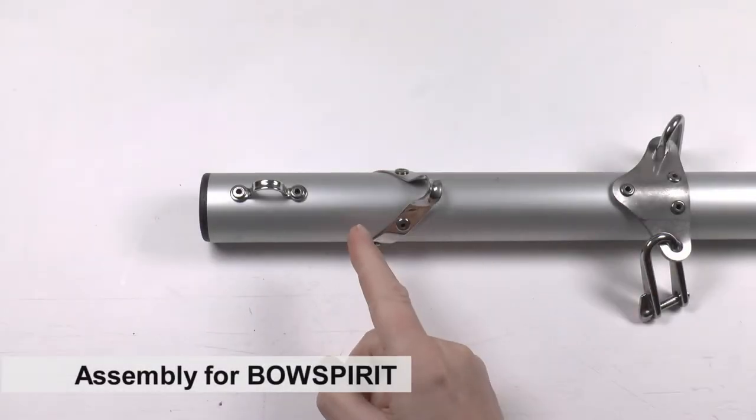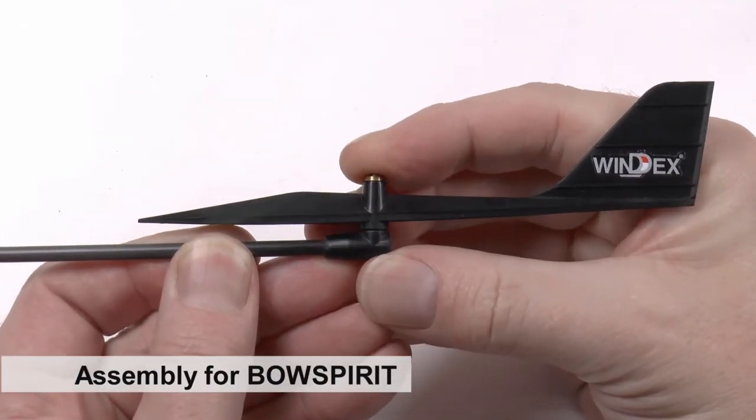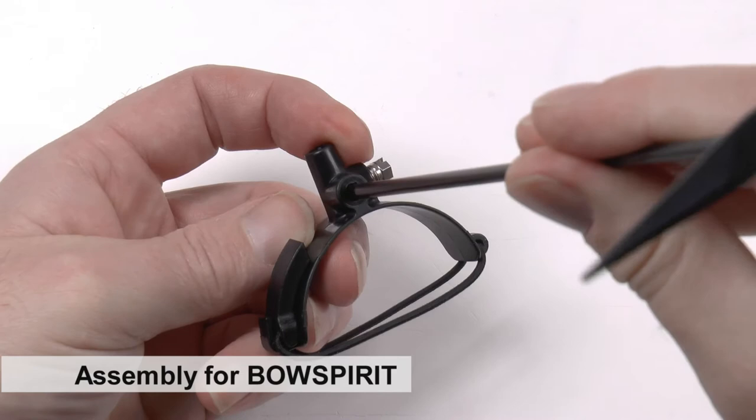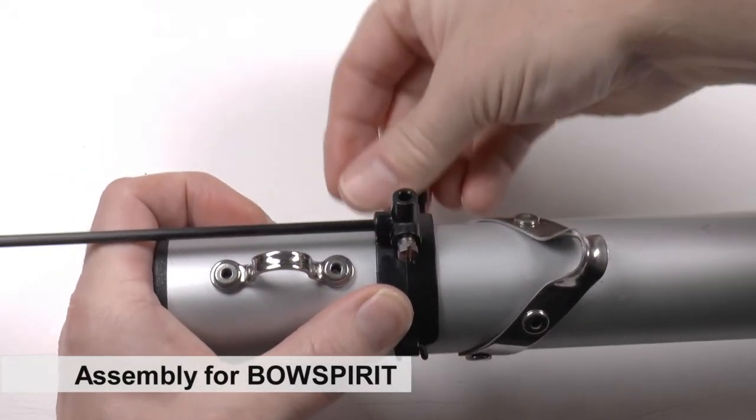Let's now instead have a look at how the Windex can be assembled to a boom. Push the vane into the shaft and then insert the shaft into the mast fitting. Assemble the Windex to your boom using the flex strap.